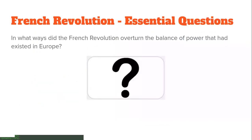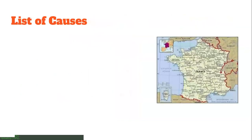The essential question that we will revisit at the end of this topic will be: in what way did the French Revolution overturn the balance of power that had existed in Europe? Think about who was in power before the revolution and how it all changed after. That's something we'll talk about once we get through everything here.